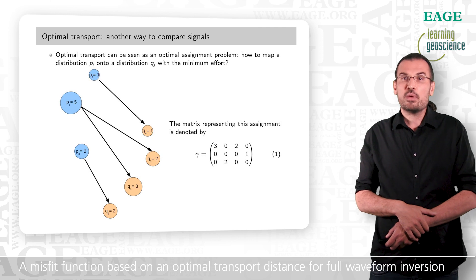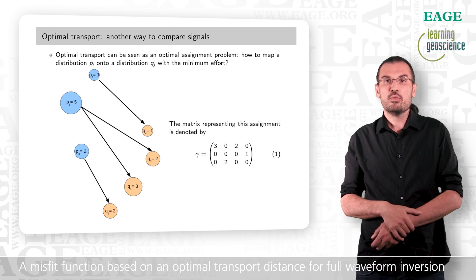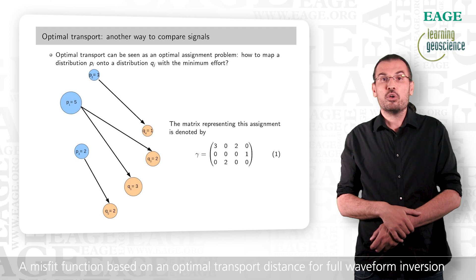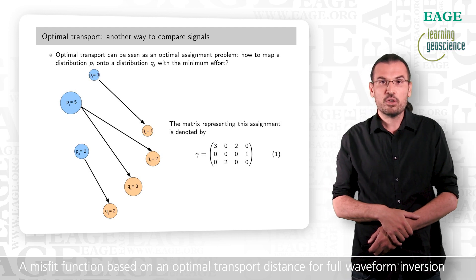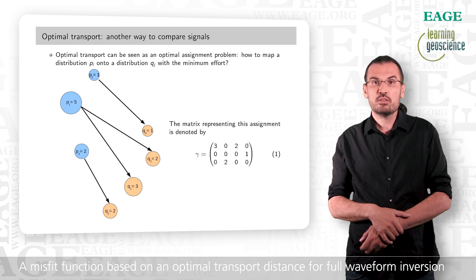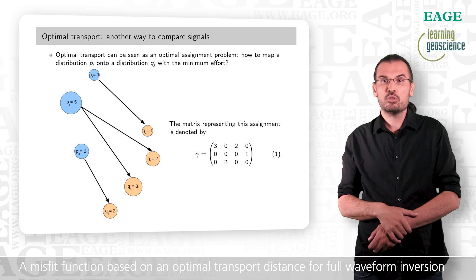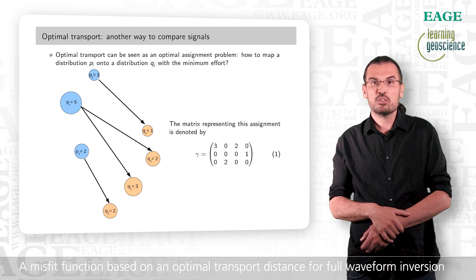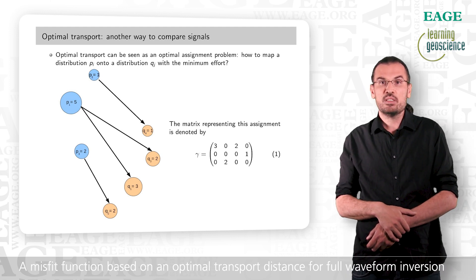Now, a few words about optimal transport. Optimal transport can be seen as an optimal assignment problem. Here, we consider the mapping of a distribution P onto a distribution Q. For simplicity, we might have in mind that P corresponds to a distribution of sand piles that need to be displaced to fill in the whole distribution Q. On this figure, the assignment which is proposed consists in splitting the five sand units of P1 into three units to move to Q1 and two units to move to Q3. The single unit of P2 is moved to Q4, while the two units from P3 are moved to Q2.